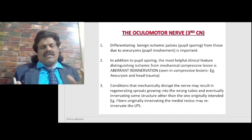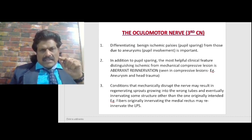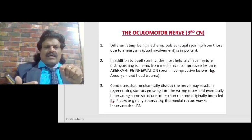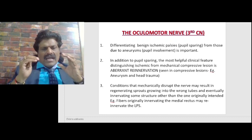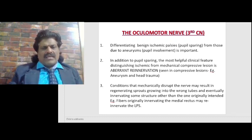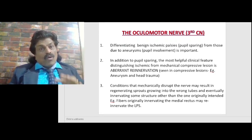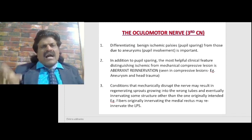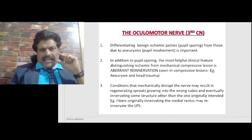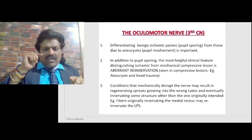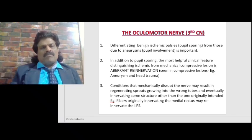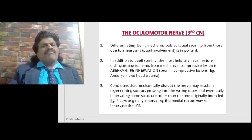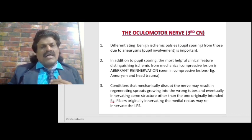What is aberrant re-innervation? A muscle specifically supplied by one branch of the third nerve may get re-supplied by another branch. Conditions that mechanically disrupt the nerve may result in regenerating sprouts growing into the wrong tubes, eventually innervating some structure other than the one originally intended. For example, fibers originally innervating the medial rectus may innervate the levator palpebrae superioris, so when the person tries to adduct, the eyelid also opens — this is aberrant re-innervation.